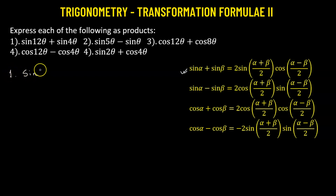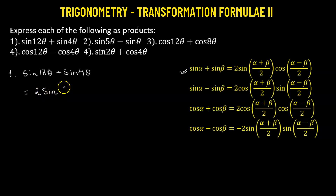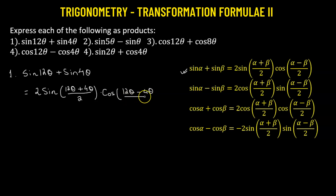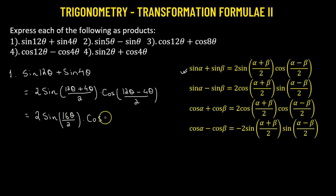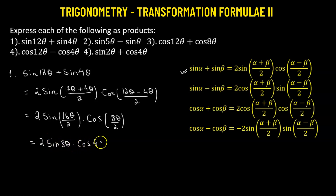Number one: we have sine 12θ added to sine 4θ. This equals 2 times sine of (12θ + 4θ)/2, multiplied by cosine of (12θ − 4θ)/2. That gives us 2 times sine of 16θ/2 multiplied by cosine of 8θ/2, which equals 2 times sine 8θ times cosine 4θ.